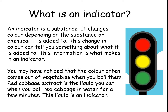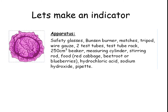Another example of a non-chemical indicator is traffic lights. You have three different colours that change to give you information about the situation — green indicates it's safe to go, yellow or amber means consider stopping, and red means you definitely need to stop. So it indicates information using different colours. Next in your booklet, you've got a description of the apparatus for making red cabbage indicator — have a read through and pause the video if you need to.